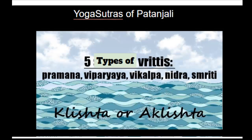How does the Yoga Sutras of Patanjali define the structure of observation? Patanjali's Yoga Sutras contain a beautiful behavioral science as well as psychological science. Patanjali says there are five types of vrittis. Vritti can be loosely translated as mental modification, and in a psychological sense it is called observation.